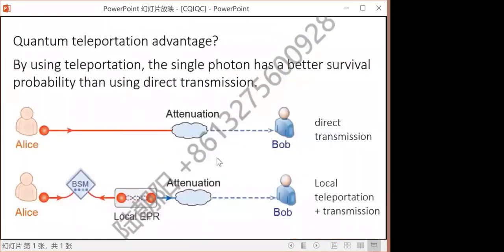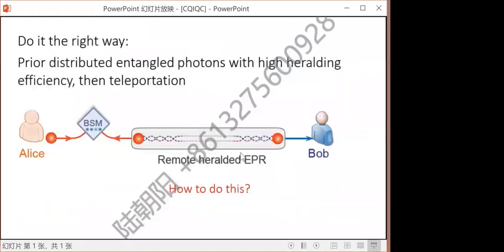You can look at these two figures and compare. We could define a new term, which maybe we can call quantum teleportation advantage, where we can send a photon and it has a better survival probability than using direct transmission.